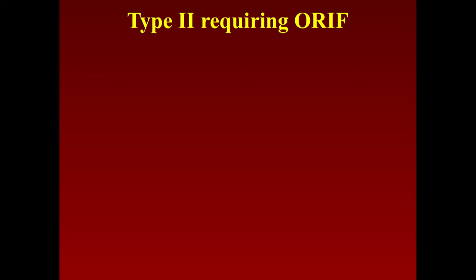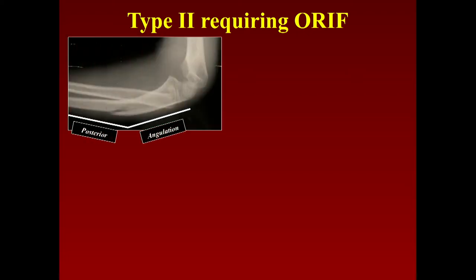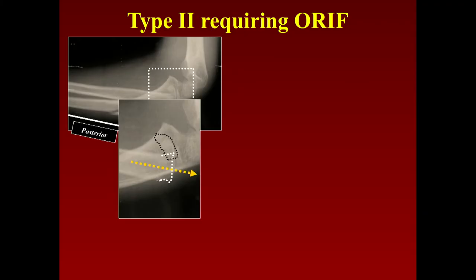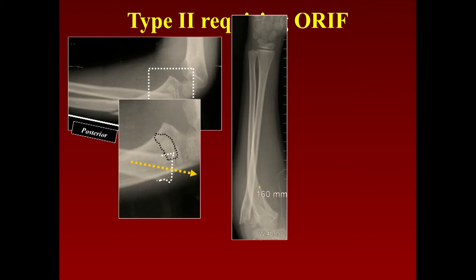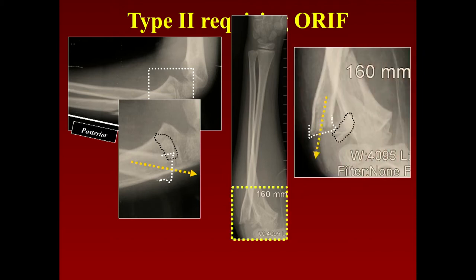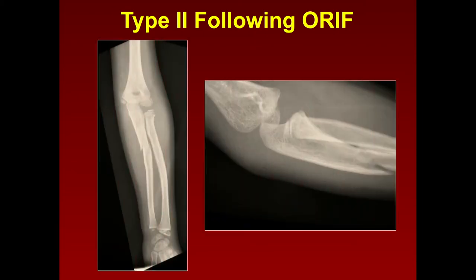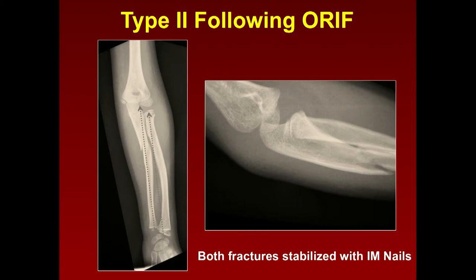Here's one of the few type 2 cases I've had to operate on. You have posterior angulation, and if you look closely, you have a fracture of the radial neck — remember a lot of type 2s occur as equivalents. There's usually a green stick, but here there's a complete fracture. On the AP view you can see displacement, posterior angulation, and also a little bit of radial bowing. This is an equivalent involving the radial neck. We reduced it in extension, and both fractures were then stabilized with intramedullary nails retrograde.